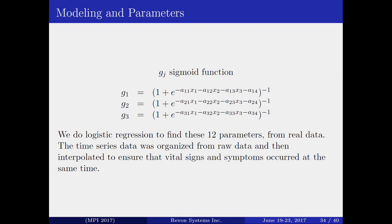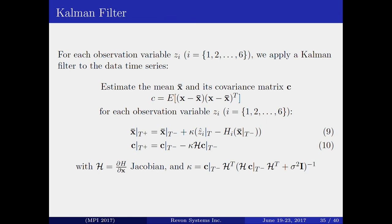Once we have data with vital signs and symptoms at the same timestamps, we do a logistic regression to obtain the sigmoid function parameters. Then we apply a Kalman filter, which updates the mean and covariance matrix. It takes real observations from the user's app input of symptoms and vital signs, weights that with previous information, updates the mean, and updates the covariance matrix via a Jacobian matrix.